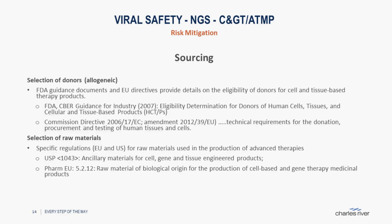For raw materials, the same principles apply, and because raw materials are very critical in the cell and gene therapy area, there are specific regulations: USP 1043 and the European Pharmacopeia 5.2.12, which give specific recommendations on how this risk should be addressed. Unfortunately, the requirements are not identical between EU and US, so it is reasonable to look at both and define your own program.